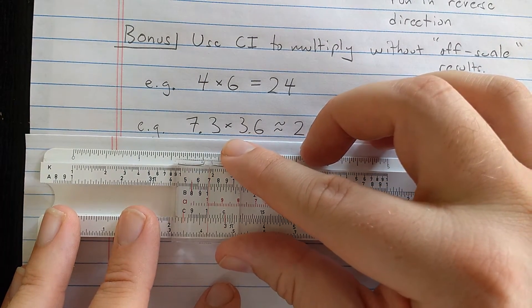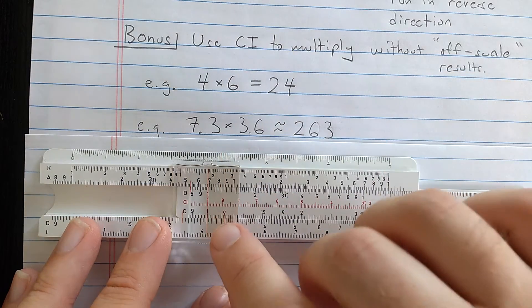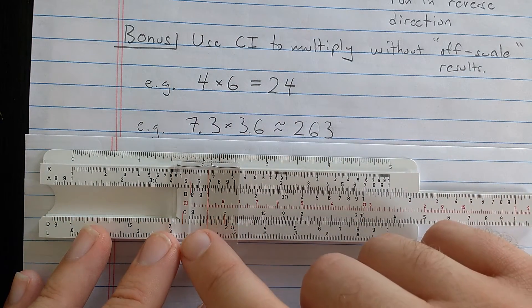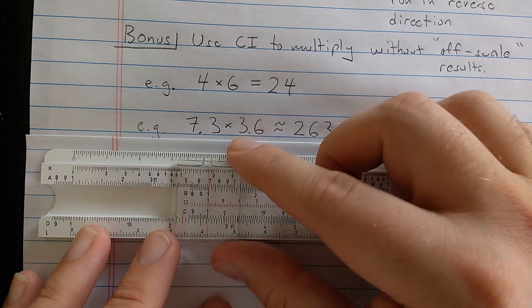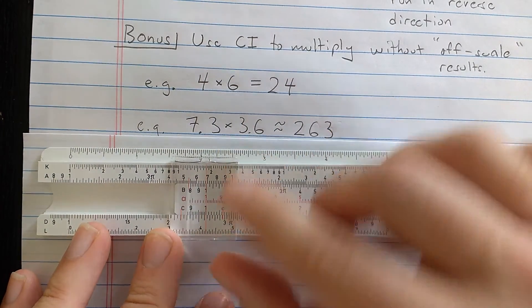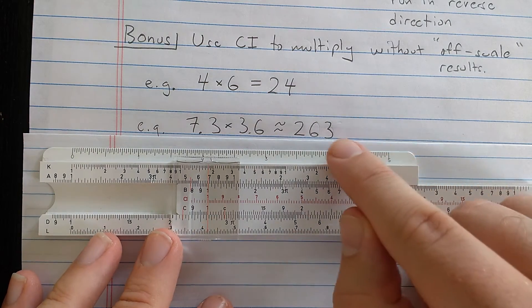Either this index or the right index will be on scale. Then I'm going to read the result there. 2, 6, and a little. When I did this before, I estimated that third digit to be about a 3. So 2, 6, 3.